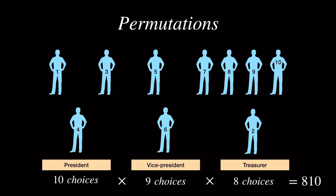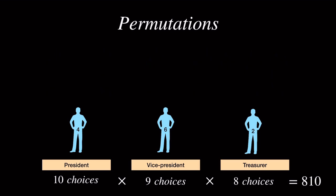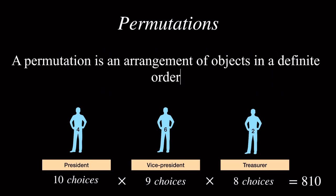For each arrangement of people we have as president, vice president, and treasurer, such as persons 4, 6, and 2, this is called a permutation. A permutation is an arrangement of objects in a definite order. In this case, we have 810 permutations.